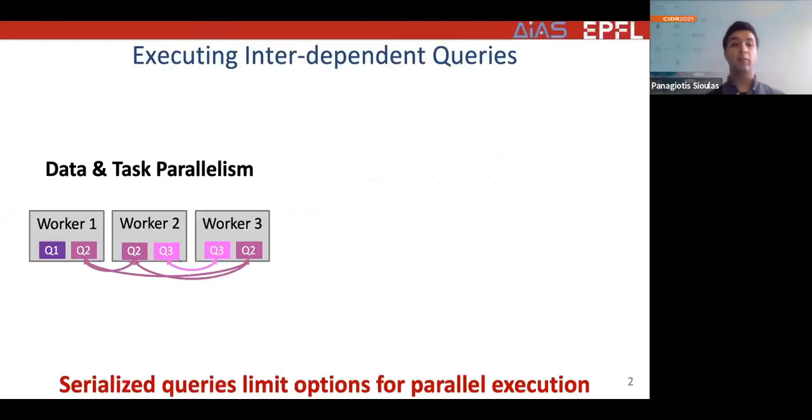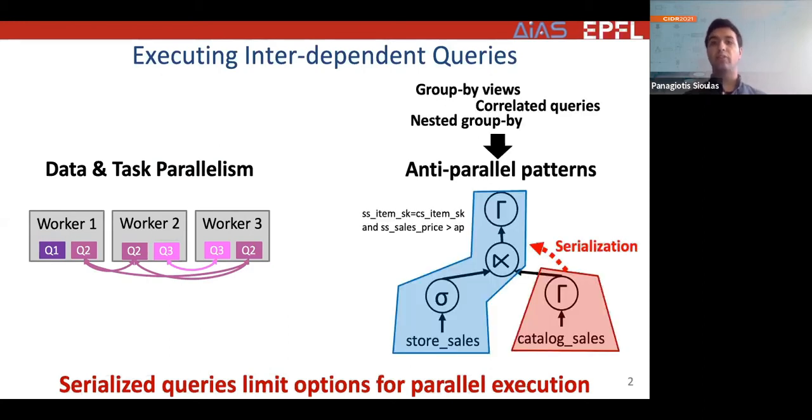To provide low latency responses, small and large organizations alike have switched to analytical engines that exploit data and task parallelism in workloads in order to scale up and out. However, despite the best efforts of the analytical engines, a broad class of workloads such as queries that contain group-by views, correlated queries and nested group-bys reduce operator patterns that restrict task parallelism.